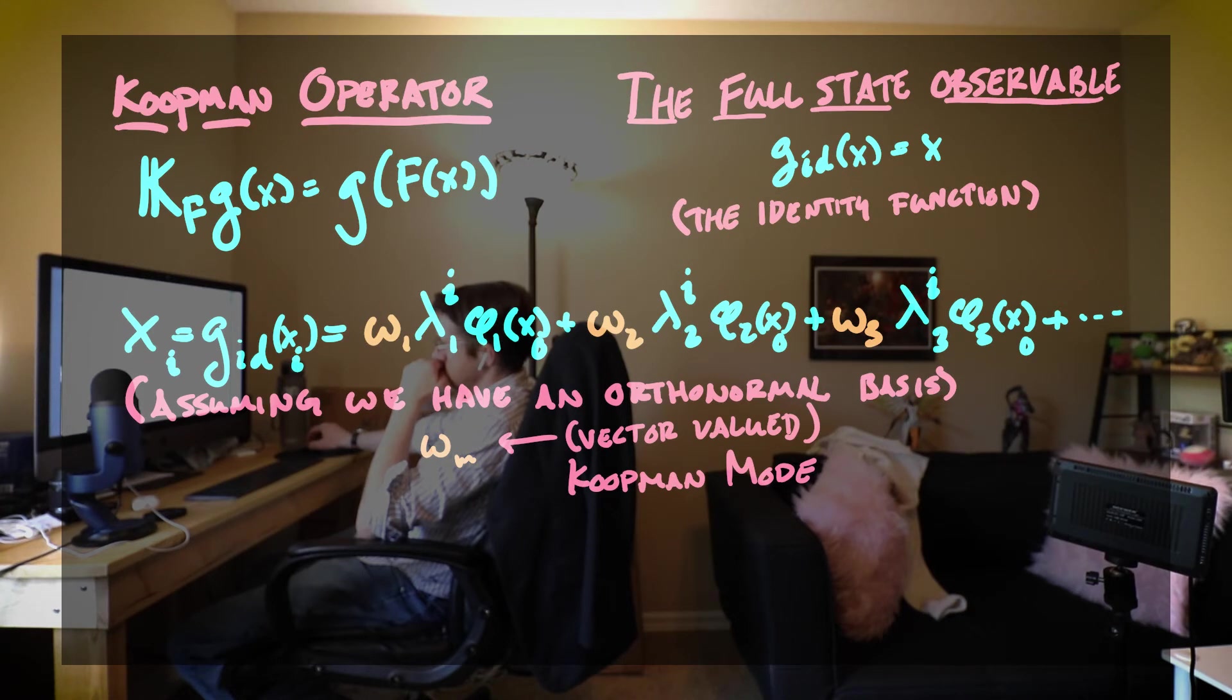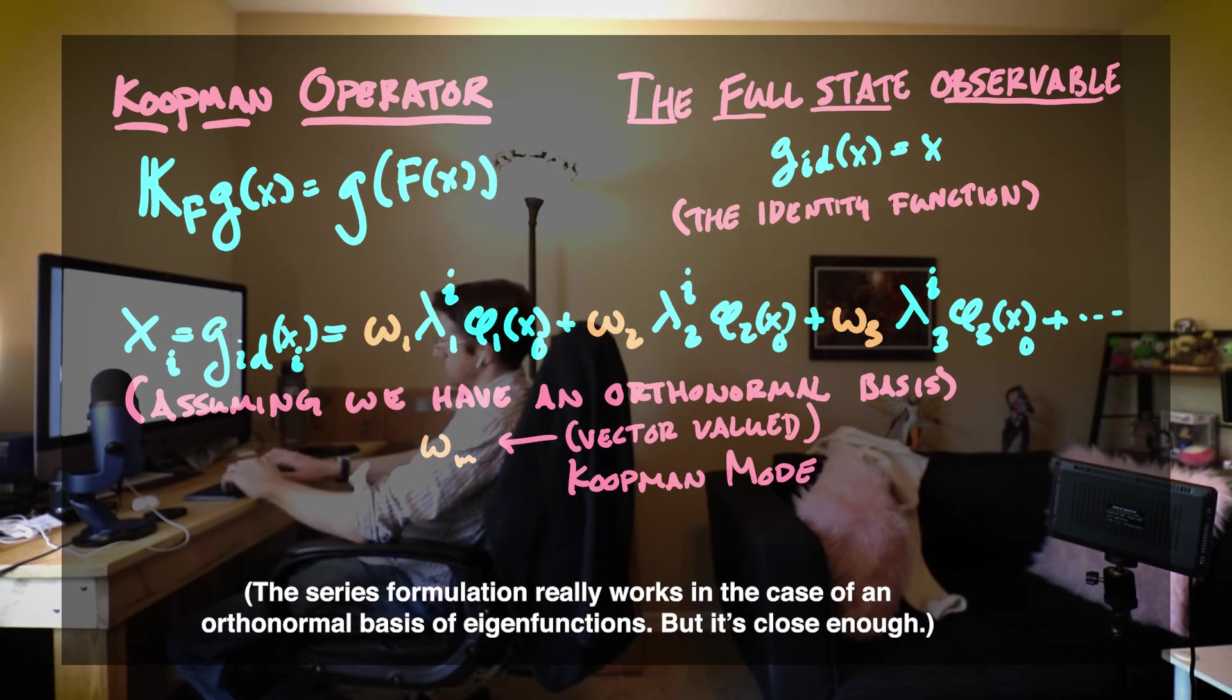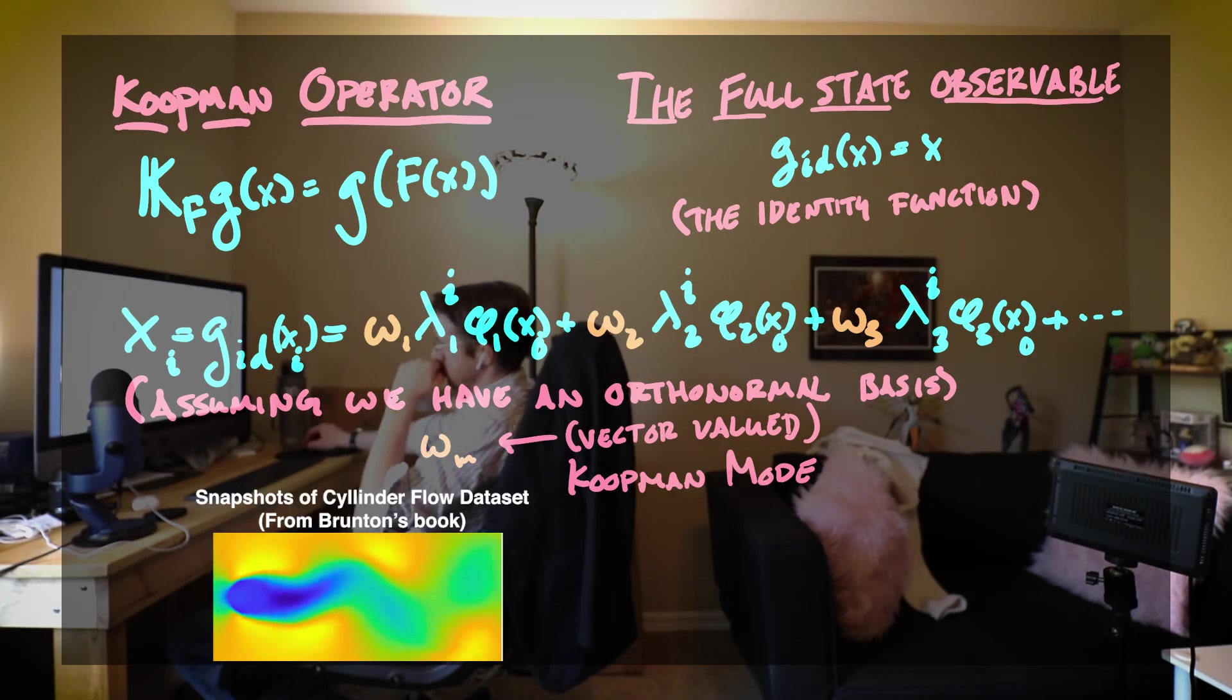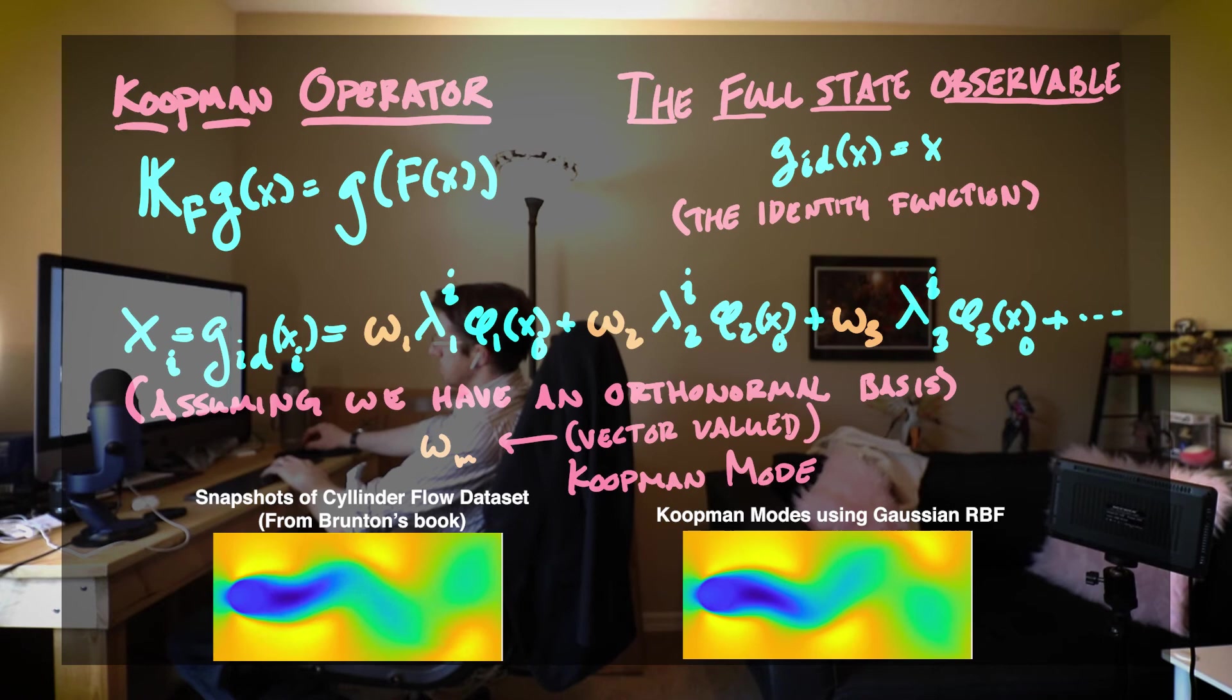But we can change all the eigenfunctions evaluated at xi to their respective eigenvalues raised to the i-th power times the eigenfunctions evaluated at x0. And ta-da! We now have a series of exponential functions representing our state from our nonlinear dynamical system.